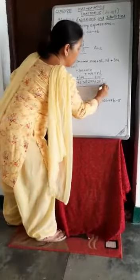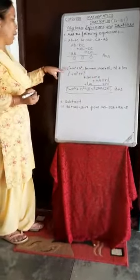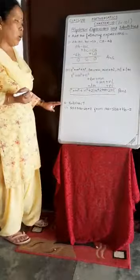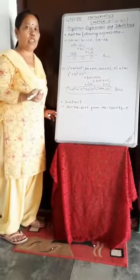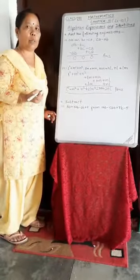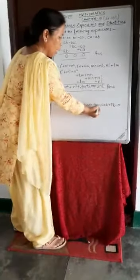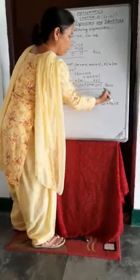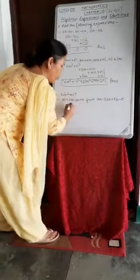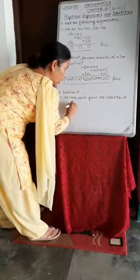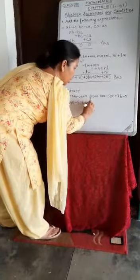Now I am going to teach you subtraction — how to subtract algebraic expressions. Subtract 8A plus 3AB minus 2B plus 7 from 14A minus 5AB plus 7B minus 5. We have to subtract the first term from the second, so we write the second term first: 14A minus 5AB plus 7B minus 5.